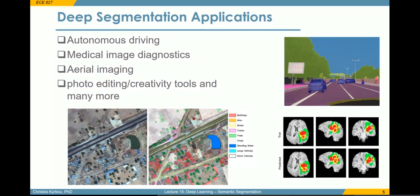Semantic segmentation is also quite popular in autonomous driving, since we want to understand everything that happens around the car — pedestrians, roads, signs, and so on. Many companies use LiDAR data available in cars to make datasets for semantic segmentation. Last but not least, we also have medical applications where we want to find malignant areas in a CT scan, for example, and using these techniques we can suggest to a doctor that they may need to take a closer look at a particular area.